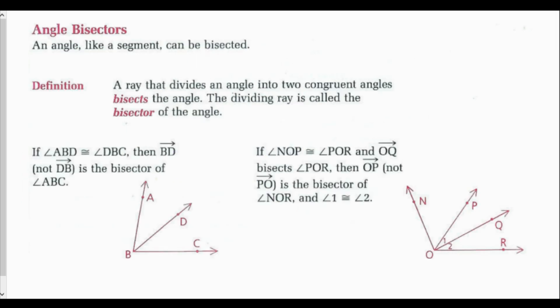Angle bisectors. An angle, like a segment, can be bisected. A ray that divides an angle into two congruent angles bisects the angle, and the dividing ray is called the bisector of the angle. In my figure on the left, if angle ABD is congruent to angle DBC, then ray BD — because B is the endpoint — is the bisector of angle ABC. If angle NOP is congruent to angle POR and ray OQ bisects angle POR, then ray OP is the bisector of angle NOR, and angle 1 is congruent to angle 2. Only a ray can bisect an angle.